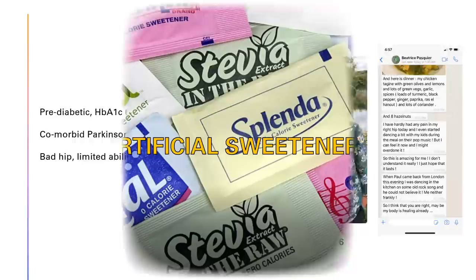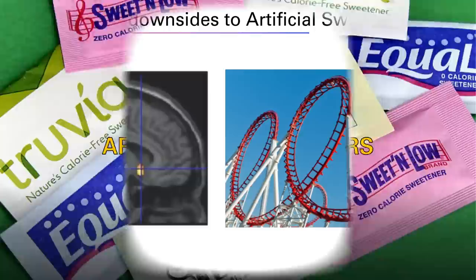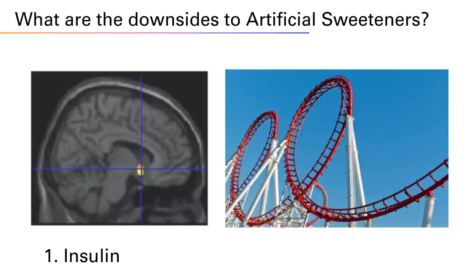Now I want to transition into artificial sweeteners — I'll spend about five to ten minutes on this. Downsides: first, most artificial sweeteners spike blood sugar and presumably insulin just like sugar. That would presumably make you eat every few hours, which is not good — it makes food hyperpalatable, puts you on the insulin rollercoaster.